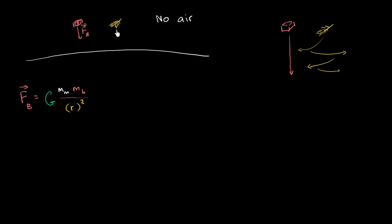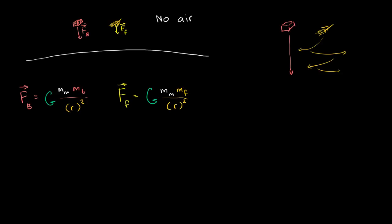What's the force on the feather — the weight of the feather on the moon? The force on the feather is going to be equal to big G times the mass of the moon times the mass of the feather, divided by the distance between the feather and the center of the moon squared. Both expressions share this common quantity: G times the mass of the moon divided by the distance squared.